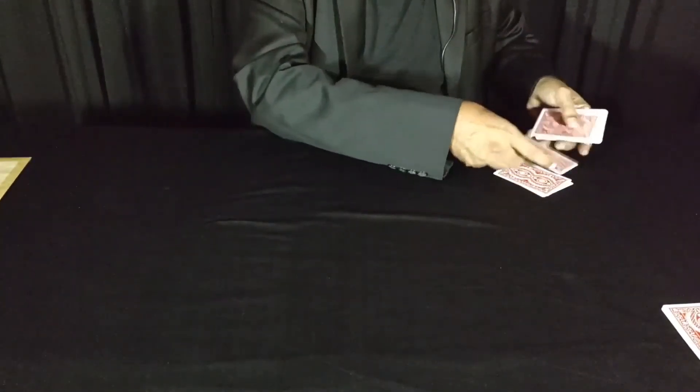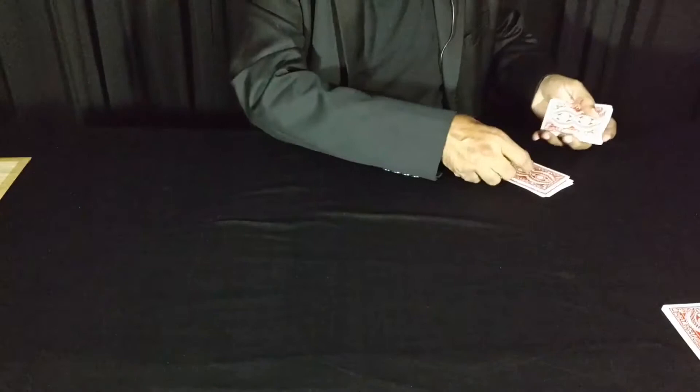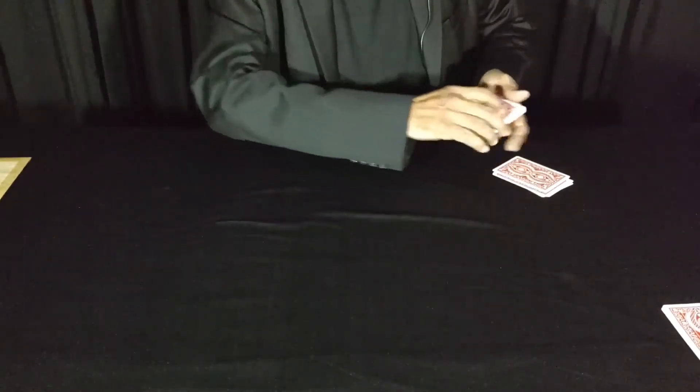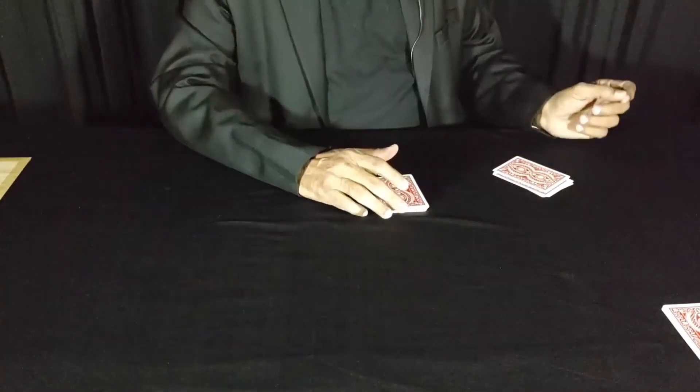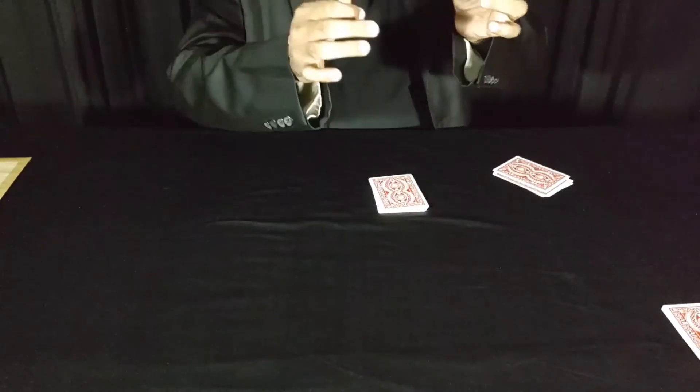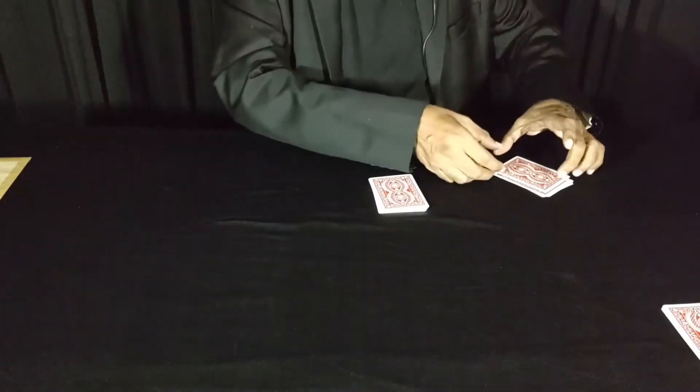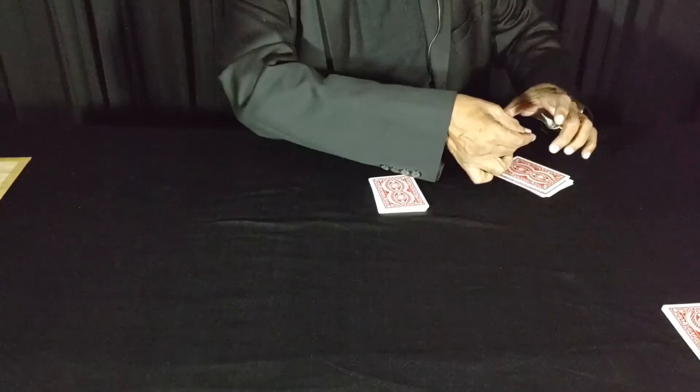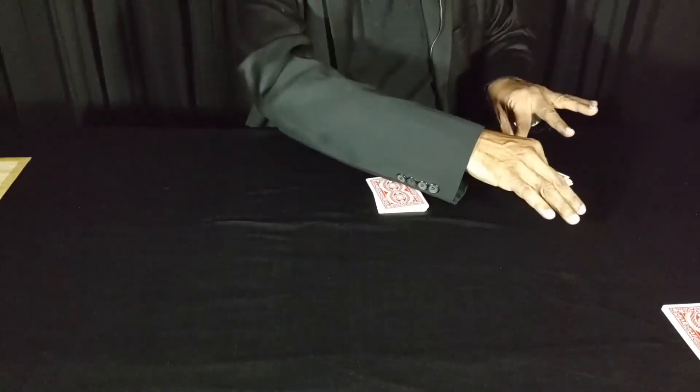Now I will deal five cards for you: one, two, three, four, five. The top card is yours. Have a look at it, show it to the camera, and take a few cards from this stack and insert your selected card and again square the stack. I should not know where the card has gone.